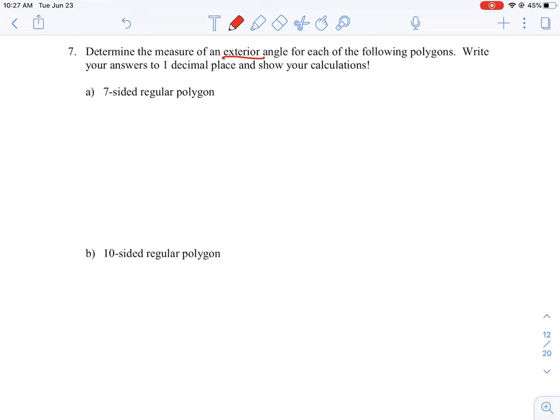So first we have a seven-sided regular polygon. A good strategy for a question like this is to always try to draw a diagram to represent what we're looking at. Seven sides is a bit of an irregular polygon.